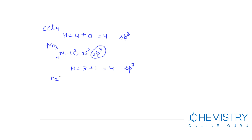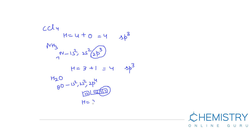Another example is water (H₂O). The central atom is oxygen, with configuration 1s2 2s2 2p4. Two hydrogen atoms form sigma bonds with the p electrons of oxygen. H equals 2 sigma bonds and 2 lone pairs. So H equals 2 plus 2, which equals 4. Therefore, hybridization in water is sp3.